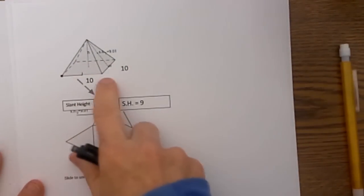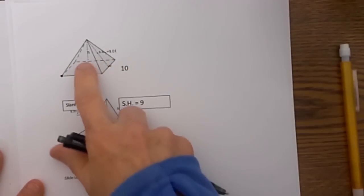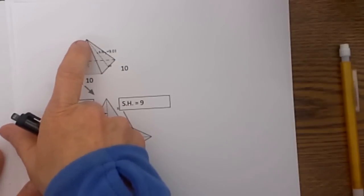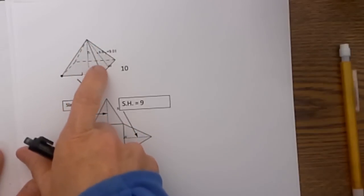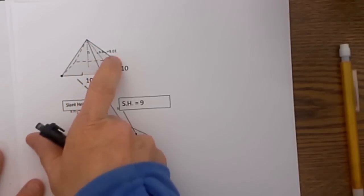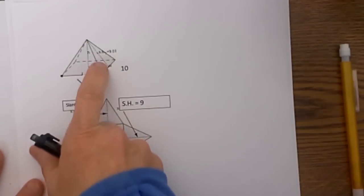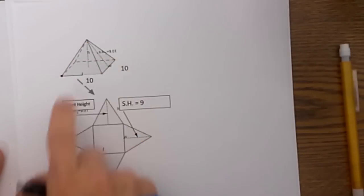Here is our square pyramid and the base is 10 on each side and then we have a height on the inside and then we have what we call a slant height which is from the apex of the point all the way down to the side of the base in the middle of the base. Now that distance right here is what we are going to need to find surface area.